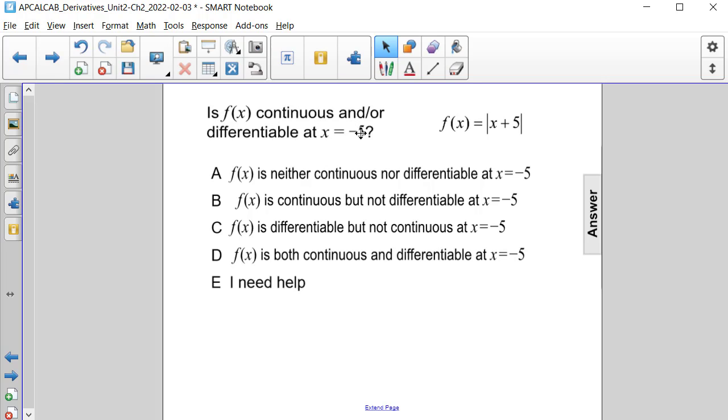Is f of x continuous and or differentiable at x equals negative 5? We know that f of x is equal to the absolute value of the quantity x plus 5. That can be rewritten as the following piecewise function.